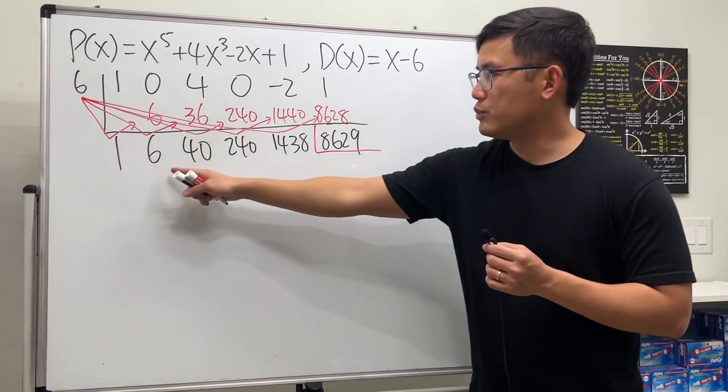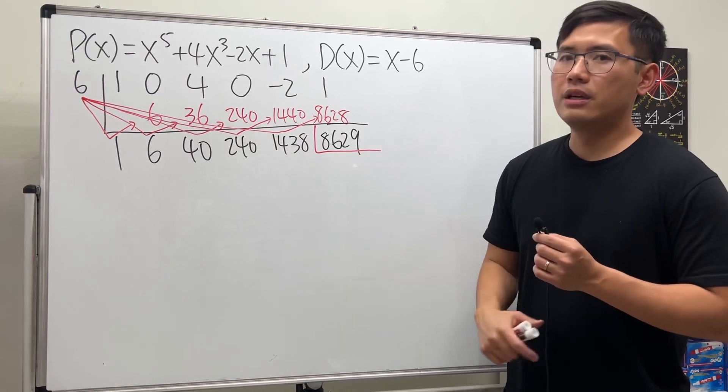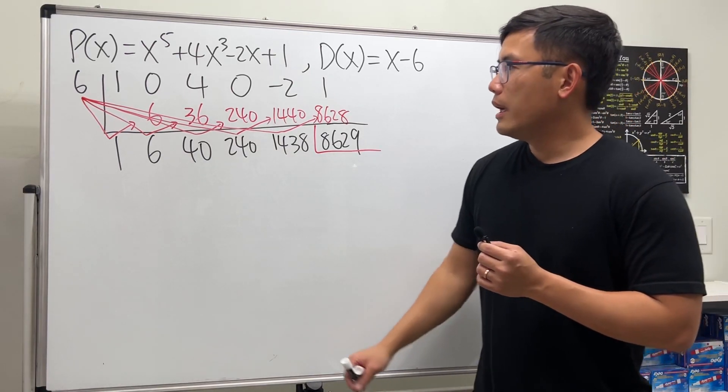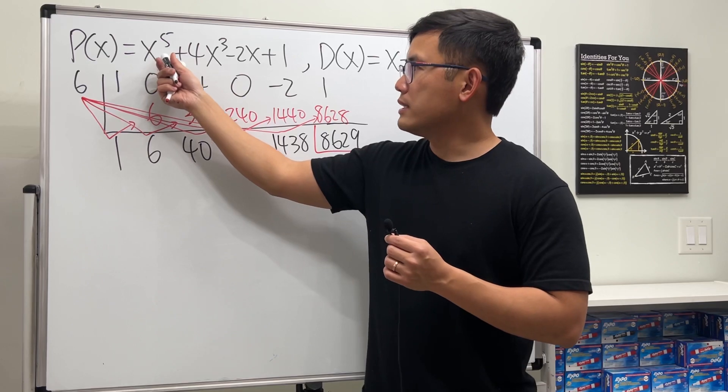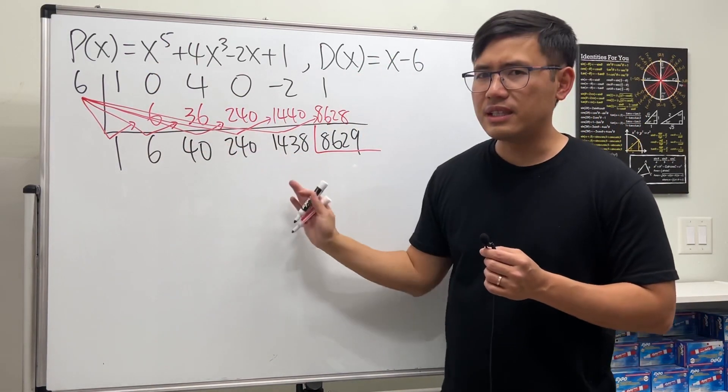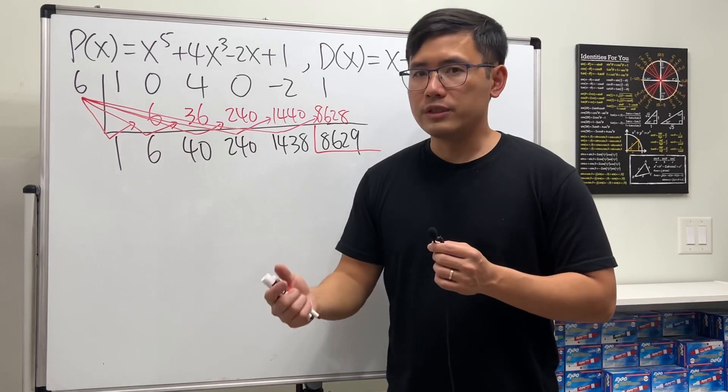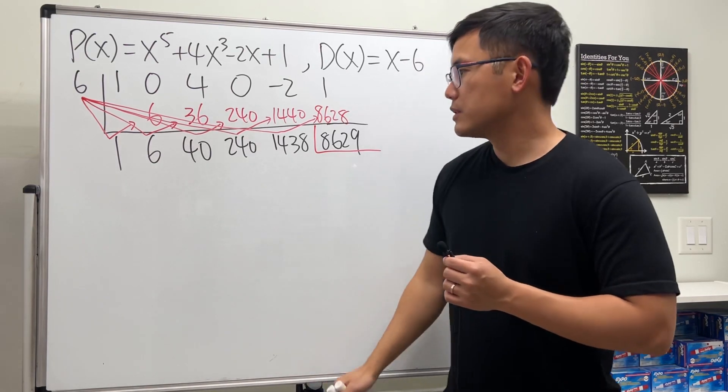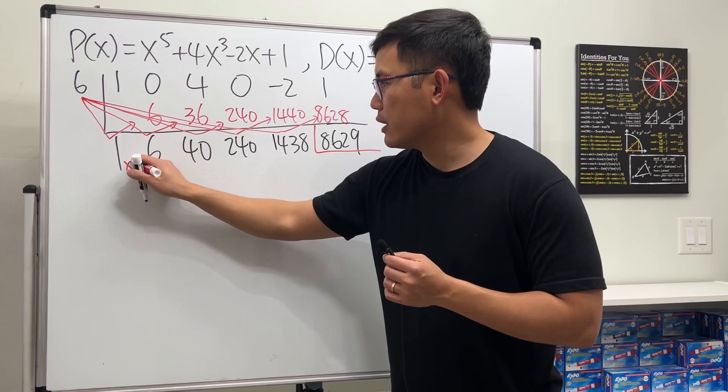And this right here is the quotient, and this right here tells you the remainder. Originally it was x to the fifth. When we divide it by x to the first, when we do the synthetic division, this right here will start with x to the fourth. So if you would like, you can label x to the fourth, x to the third power.